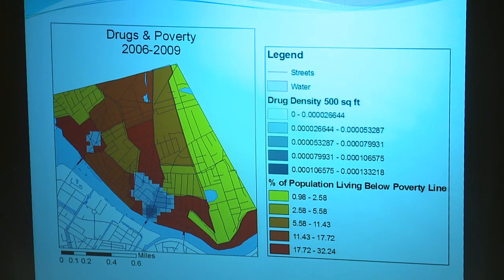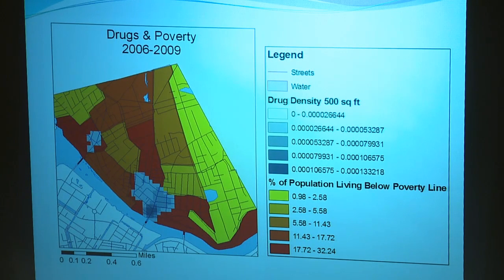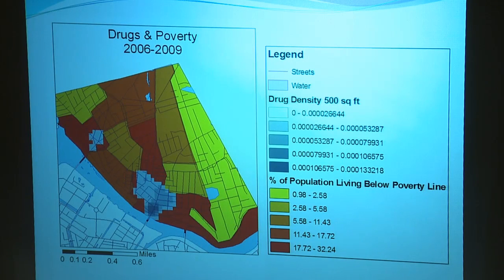A similar map with the same census data now overlaid with drug hotspots shows the hotspots falling in the same census block groups, with the exception of the southern Centerville hotspot which expands more into the residential area. Along the northeastern border of Centerville, bordering the town of Dracut — a small quiet town north of Lowell — less than 2.5 percent of the population is living on the poverty line. This is the area I refer to as the commuter zone, where people are living in a more stable, socially organized community.